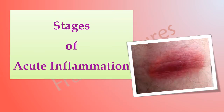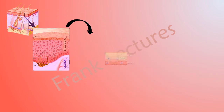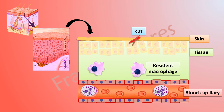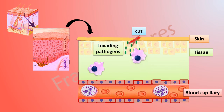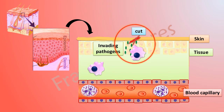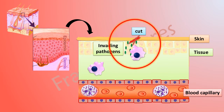Let's study the various stages in acute inflammation. When there is an infection, for example a cut in the skin, the resident macrophages at that particular site recognize the invading microbes, and this recognition triggers inflammation. The very first requirement is the recruitment of leukocytes and plasma proteins such as complement proteins to the site of injury so they can destroy the microbes.